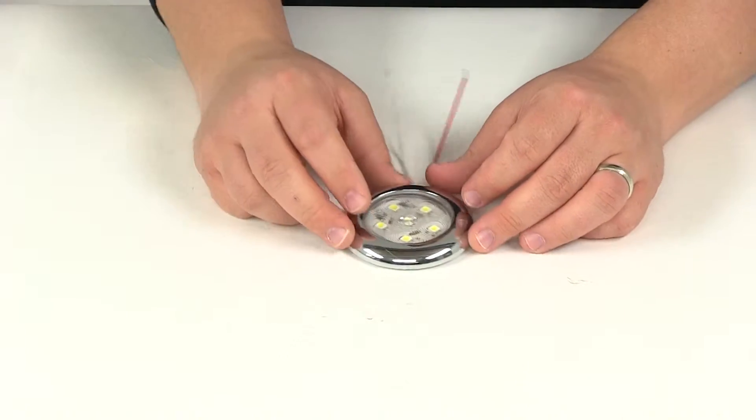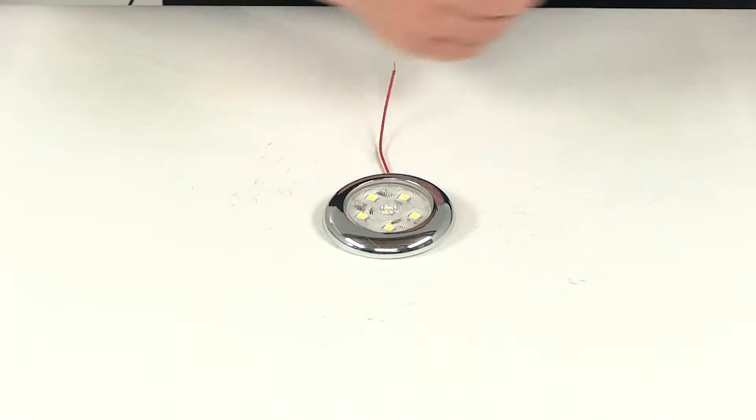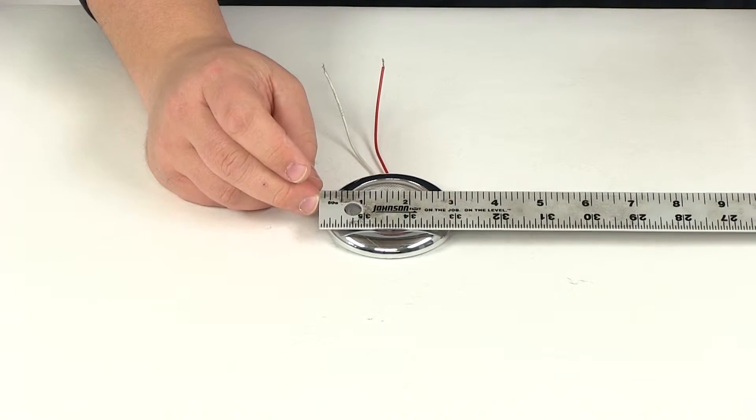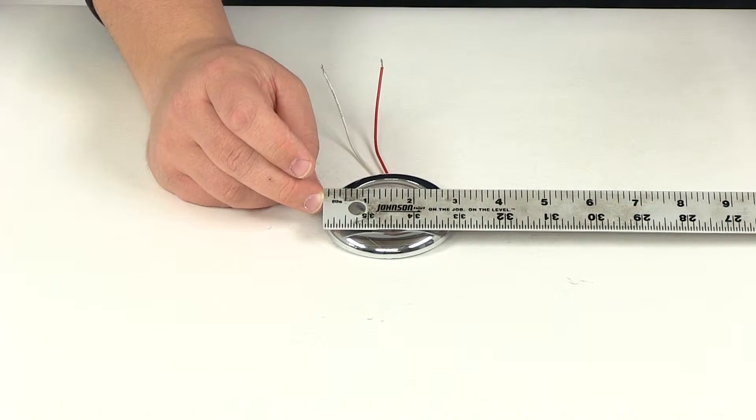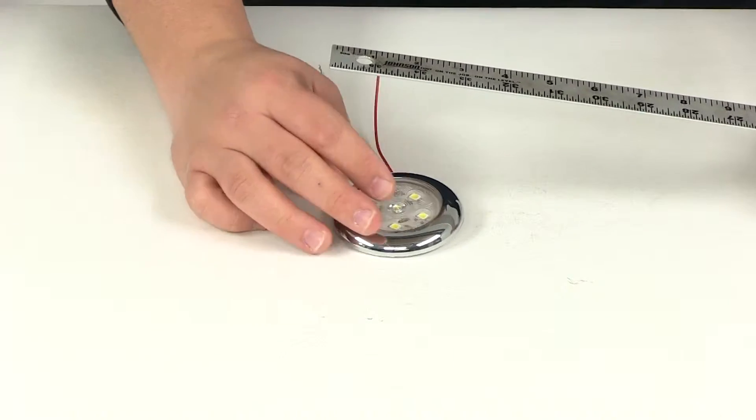It's a nice round shape. If we take a measurement of the overall diameter here measuring from edge to edge, it gives us a measurement of three inches and a thickness of three-eighths of an inch.